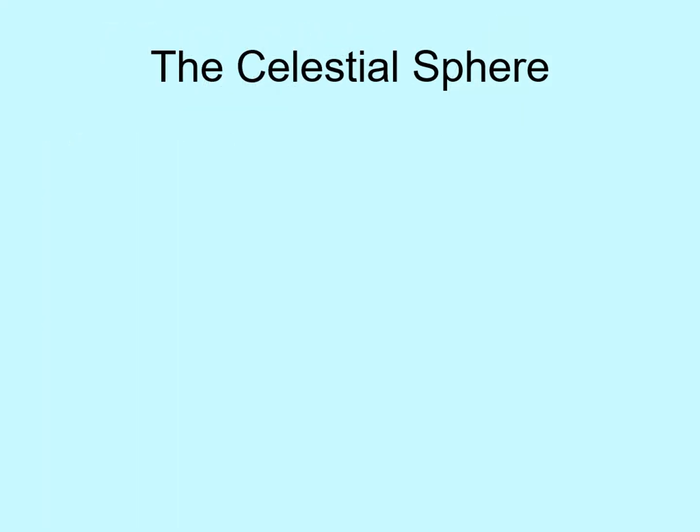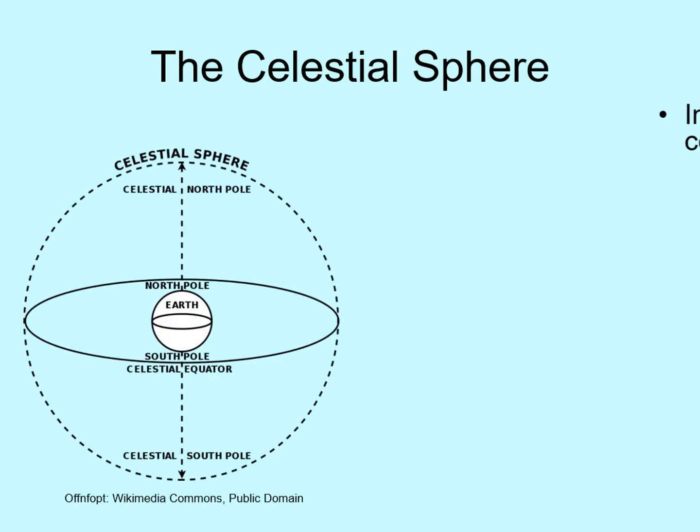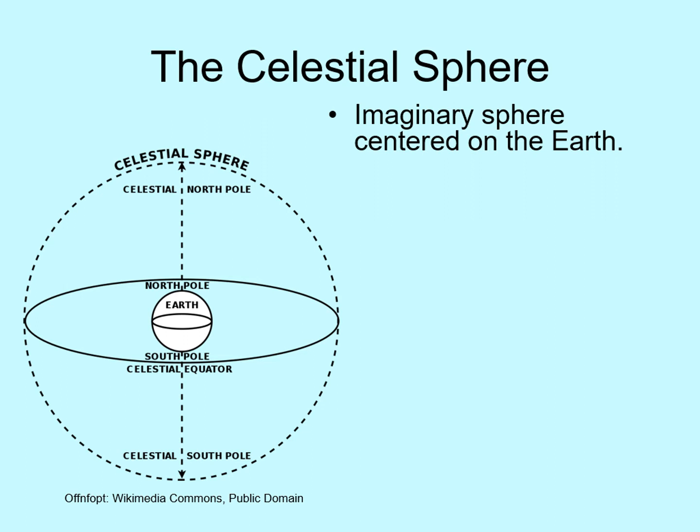Let's look at daily motion in some more detail. We've just talked about how moving east or west doesn't really affect our view, just the time. Now, what about moving north or south? To understand this, we're going to have to talk about an idea called the celestial sphere. The celestial sphere is an imaginary sphere centered on the Earth. We pretend that all the stars are just attached to this giant sphere, and that the daily motion we see is just this sphere spinning around us. 500 years ago, this was our standard model of daily motion. While we know it's not true now, it's still a useful way to help us visualize how stars appear to move in our sky.